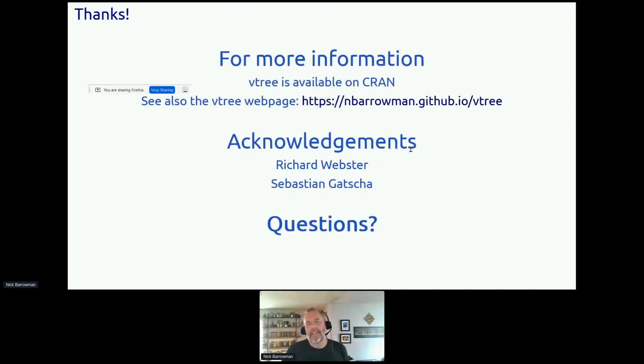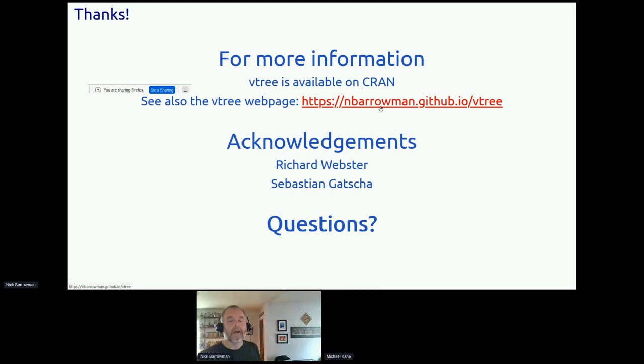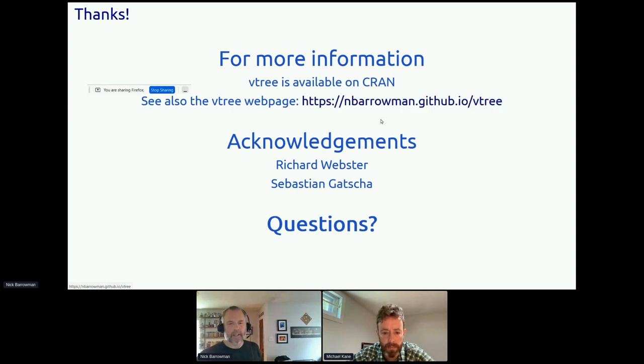So that brings me to the end of my talk. And once again, I apologize for the technical snafus at the beginning. VTree is available on CRAN, and check it out there. Also, I have a web page set up right here. And there's lots of resources there, including a draft paper, which is currently under review. So you can take a look at that. My co-author is Richard Webster on that paper. And I also want to acknowledge Sebastian Gacha, who added shiny bindings to vtree. All right, thanks very much. And if there's time for questions, I'd love to take them. Thanks.